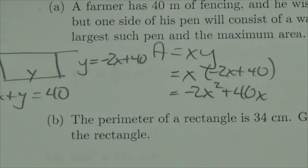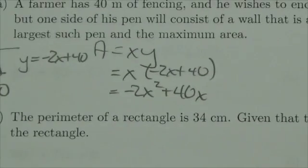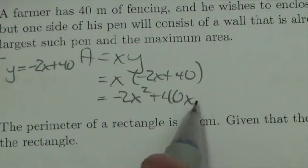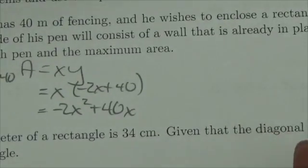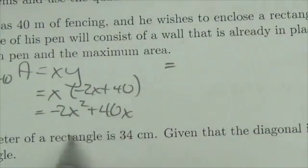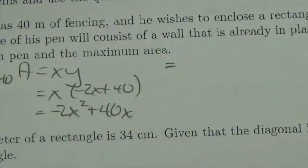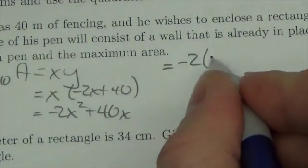Now in order to find the maximum area, what I need to do is complete the square on this. So now normally what I would do with completing the square is I would take the constant term out here, move it out of the way, but there is no constant term. So now what I'll do is I'll just take out the leading coefficient, that negative 2.